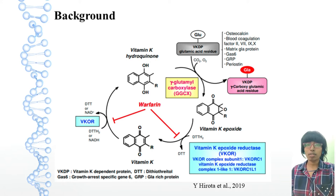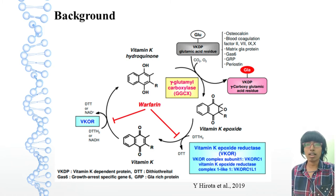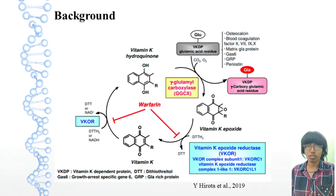Natural vitamin K includes phyloquinone derived from plants and minocoinone derived from intestinal bacteria and fermented foods. Vitamin K obtained from the diet is considered to reach the target tissues via lipid absorption and the transport system.